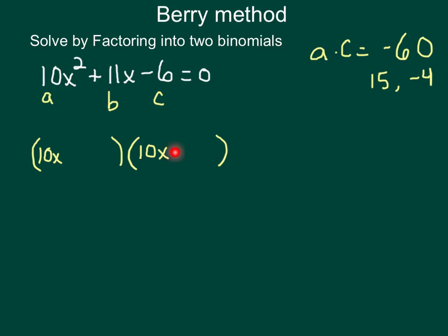We need a second part of our binomial, and we get that from these parts over here. I have a 15 and I have a negative 4. I'm just going to write those in there, and it does not matter what order you write them in.